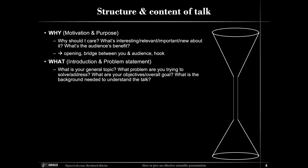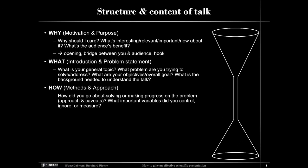The 'what' part could be the introduction and problem statement — what is it really about, what aspects of the problem are you trying to solve, where do you address a gap in the literature, why are you doing this? Coming back to the motivation can often help. What's your overarching goal? Always consider what background people need to understand your talk. Another part to cover is the actual 'how' — how did you do your research, what approach did you use, how did you go about solving the problem, what are caveats, what did you control?